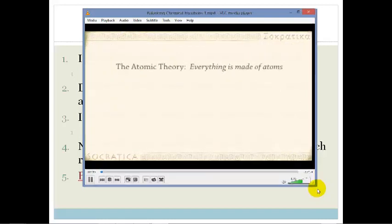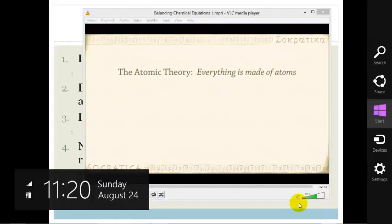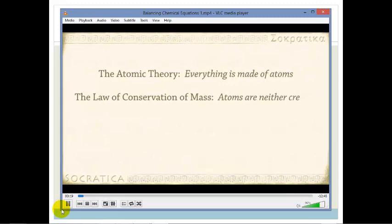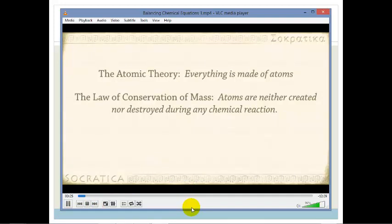When scientists established that everything was made of atoms, we call this the atomic theory. The law of conservation of mass came to be stated as atoms are neither created nor destroyed during any chemical reaction. What this means for us is, when you're writing out a chemical reaction, a chemical equation, you'd better make sure it has the same number of atoms on the left side of the equation as on the right side.